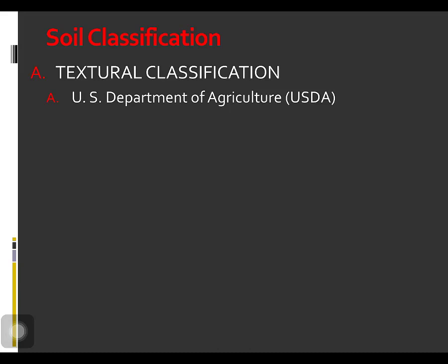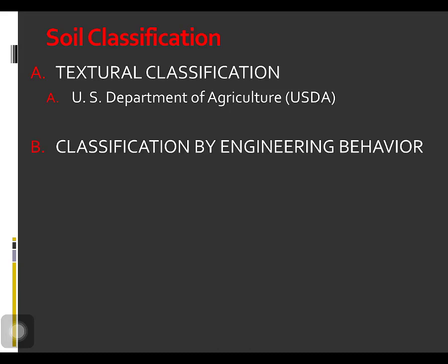This classification method is based on the particle size limits described under the USDA system. Sand size ranges from 2 to 0.05 millimeters in diameter. For silt size, it is 0.05 to 0.002 millimeters in diameter. For clay size, it is smaller than 0.002 millimeters in diameter. There is also classification by engineering behavior.